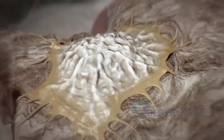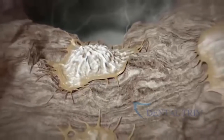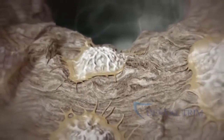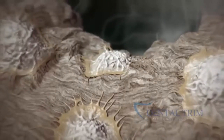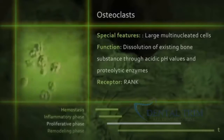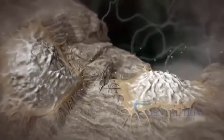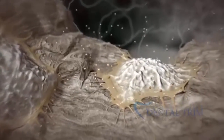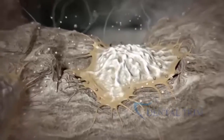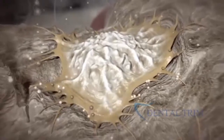Starting around day seven, activated osteoclasts attach themselves to the fracture edges of the residual bone, resorbing it and creating space for bone healing — though this will initially reduce the primary stability of the implant. The osteoclasts dissolve the bone using hydrochloric acid and proteases, releasing BMP, TGF-beta, and PDGF from the bone matrix, which in turn initiate the formation of new bone.